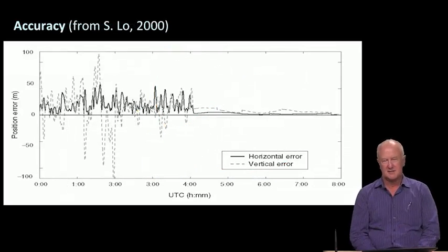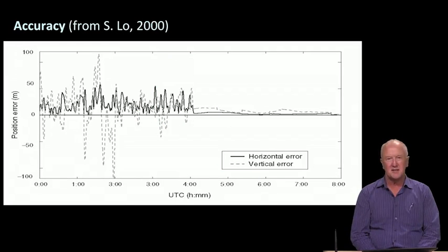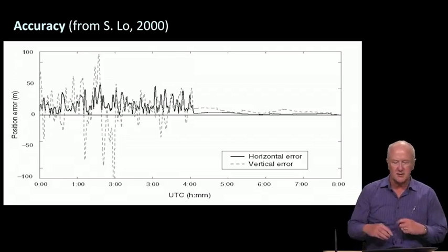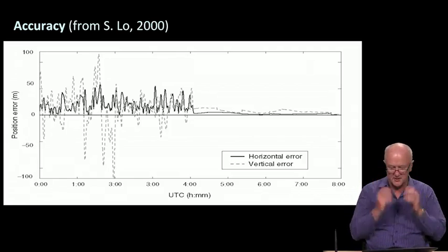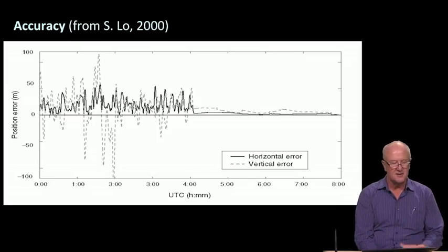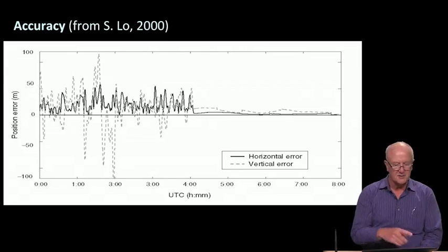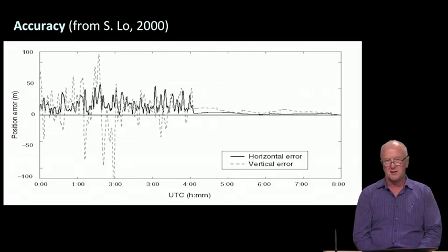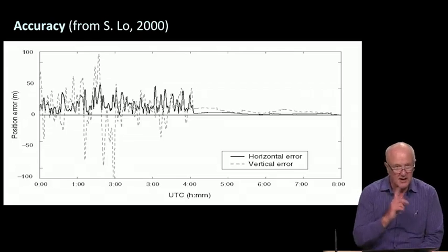In this case, the figure that you see there is in force. And please take a close look. It's really worth our study. What we have there are eight hours worth of data. And the dashed curve is the vertical error. And notice the scale on the left, it goes from minus 100 meters up to plus 100 meters. So that is the scale that was appropriate prior to the year 2000. We'll come back to that.